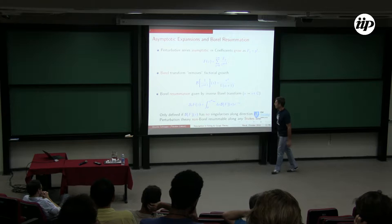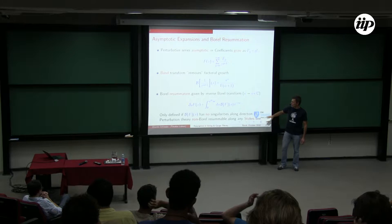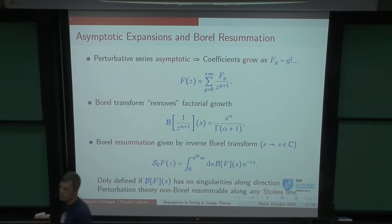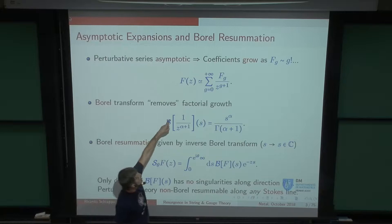Those lines where I have singularities are known as Stokes lines. We know that they are always present no matter what the problem is, as long as it was asymptotic to start off with. If there were no singularities, that would just mean the series was well-defined and I didn't have to do any of this.